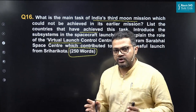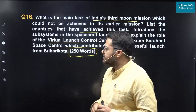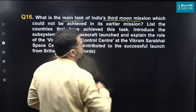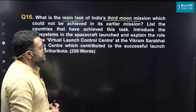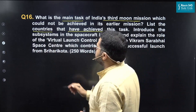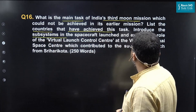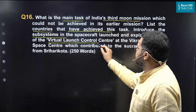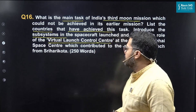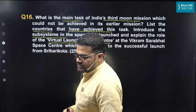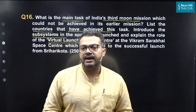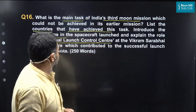This question is very long and the demands are quite extensive. If I simply mark the keywords, first you have to talk about the main task of the third moon mission of India which has not been achieved in earlier missions. Secondly, you have to talk about the countries that have already made this achievement. The third part covers the various subsystems of the spacecraft and their basic applications. Then you have to talk about the role of the virtual launch control center located at the Vikram Sarabhai Space Center at Bangalore, which contributed to the successful launch. So there are four major parts to this answer.